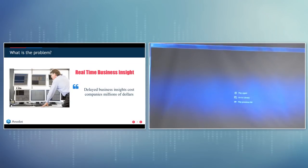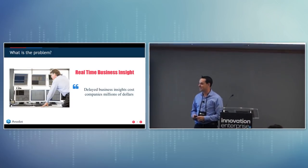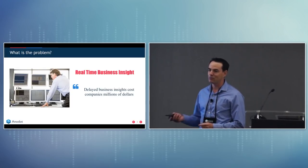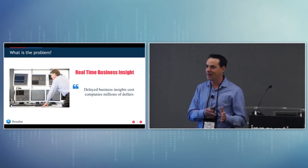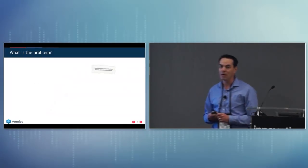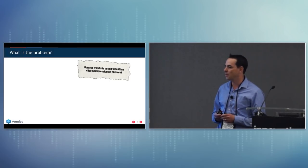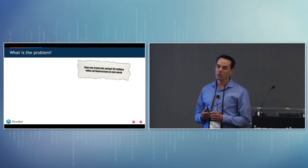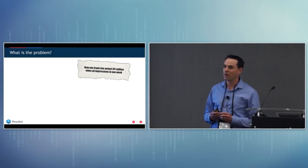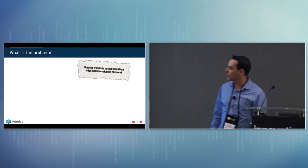I hope you liked that dramatic video — I call it a disaster video, showing what happens when you don't have real-time business insight. This was an example of a price glitch. I can tell you that usually when I go to shop, I have the opposite price glitch — I buy at the higher price. The price glitch is just one example of what happens without real-time business insight, and we see it in every industry.